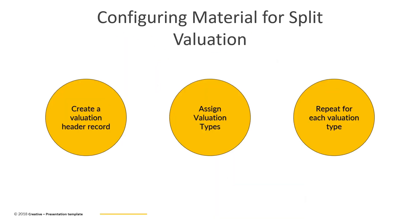So how do we create materials for split valuation? There are three steps when creating a single material record for split valuation. The first step is to create a valuation header record. We first create a material master as we would for any regular material, and in this material master we enter a valuation category in the accounting view. The valuation category determines how the material is split for valuation purposes. At this stage we leave the valuation type field blank, and when saved, the system creates a valuation header record which accumulates the values and quantities of the individual partial stocks.